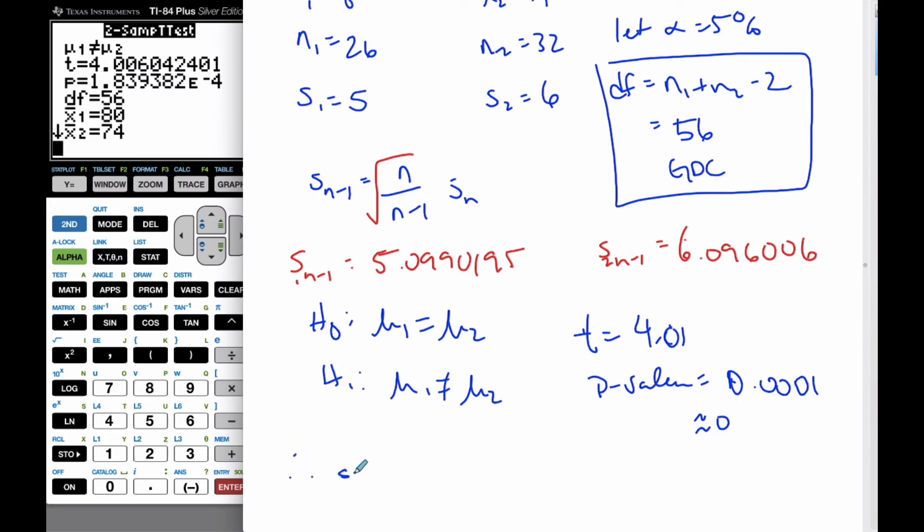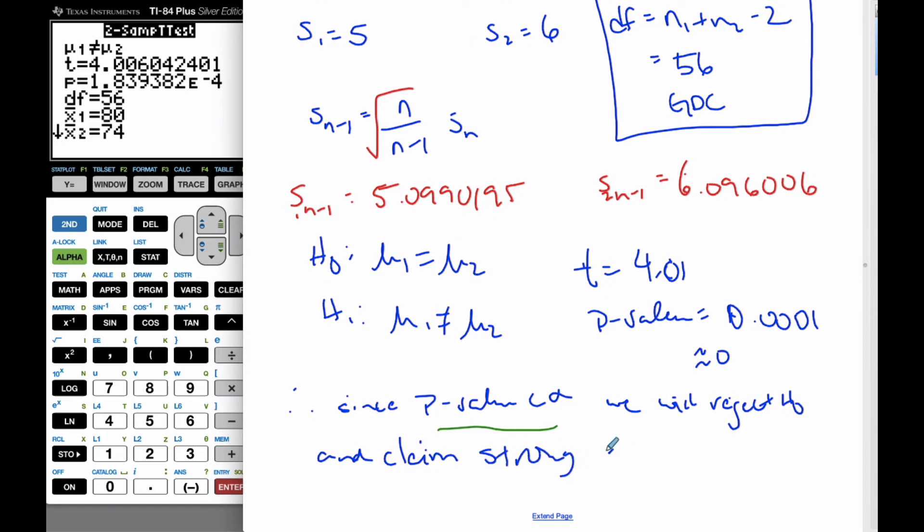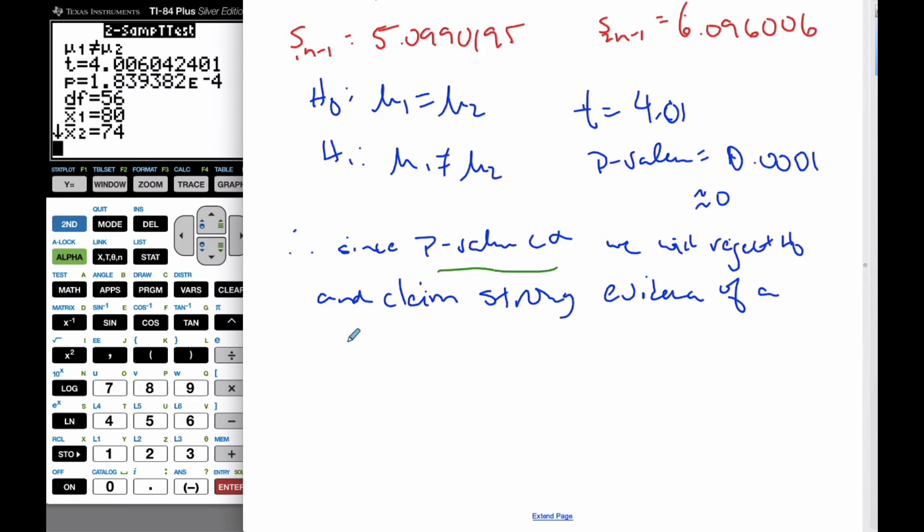So now, therefore, since the p-value is less than alpha, so we always start with a reason, we will reject H0. And then we either reject or don't reject, and claim. Then we talk in context about the alternative hypothesis. This time, we claim strong evidence of a difference between smokers and non-smoker heart rates. We always have to have the reason, we either reject or don't reject, and then a statement in context of strong evidence or weak evidence or no evidence. There's always three parts to a conclusion.